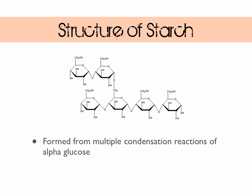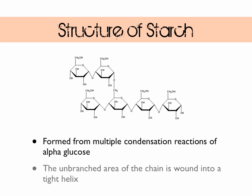Starch is formed from multiple condensation reactions of alpha glucose - here we have six alpha glucose molecules that have condensed together to form a little bit of starch. The number of water molecules formed equals the number of monomers minus one, so that's five. The unbranched region isn't just left as a chain - it's wound up into a really tight helix, which is really important as we'll see later.